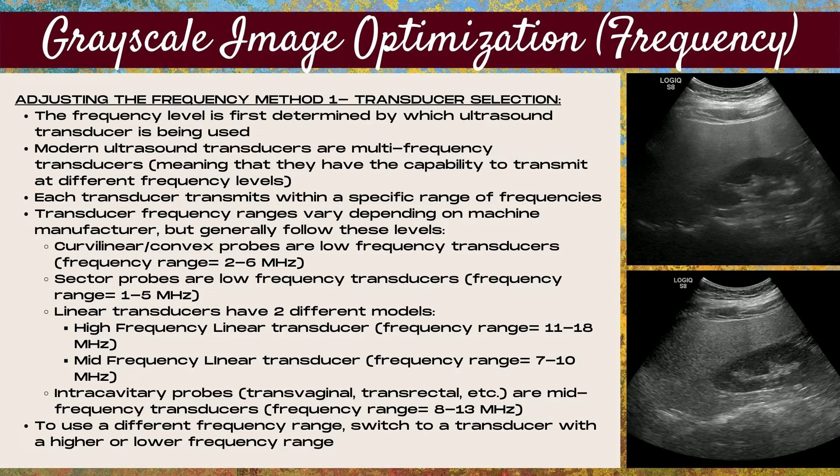Sector probes are also low-frequency transducers with a frequency range generally in the 1 to 5 megahertz region. Linear transducers come in two models: a high-frequency model with a range of around 11 to 18 megahertz, and a mid-frequency model with a range of 7 to 10 megahertz. Intercavitary probes, such as transvaginal or transrectal probes, are mid-frequency transducers with a range of generally 8 to 13 megahertz. To use a different frequency range, switch to a transducer with a higher or lower frequency range.